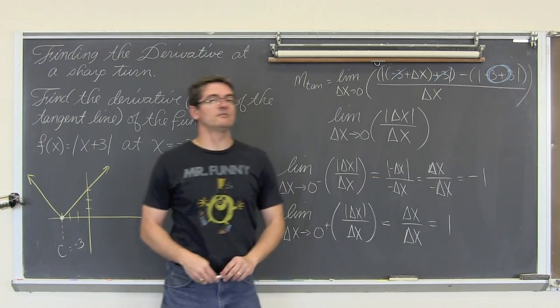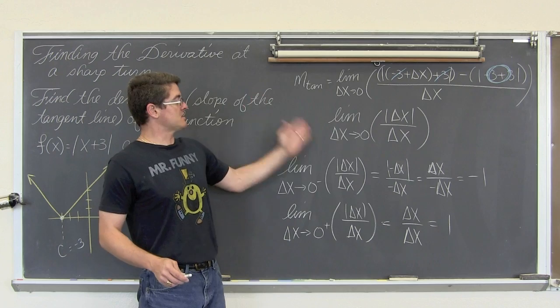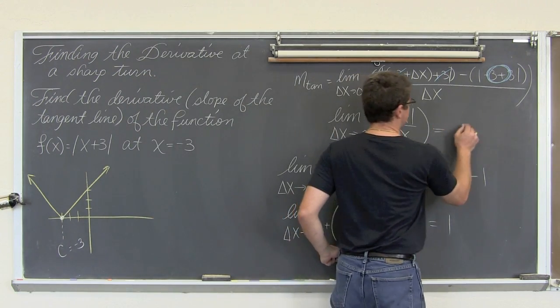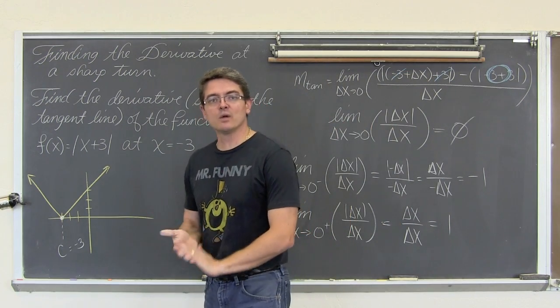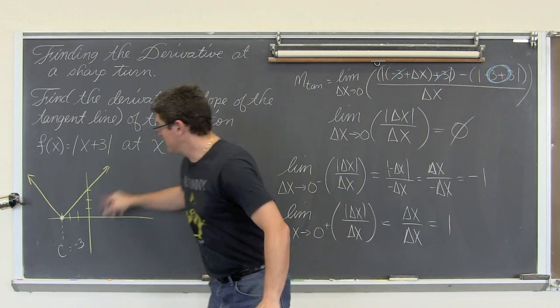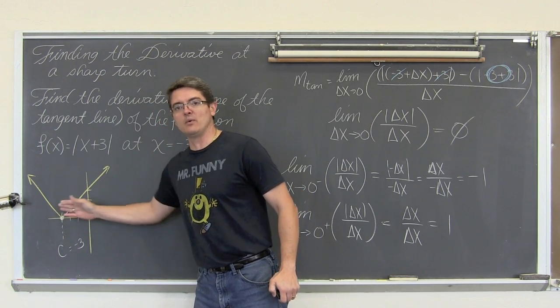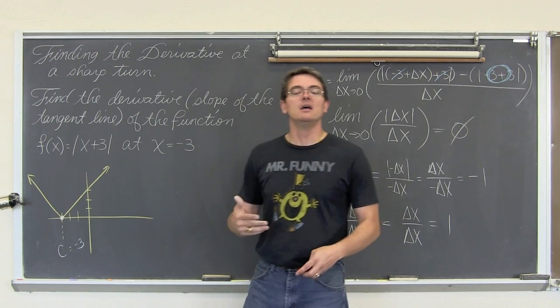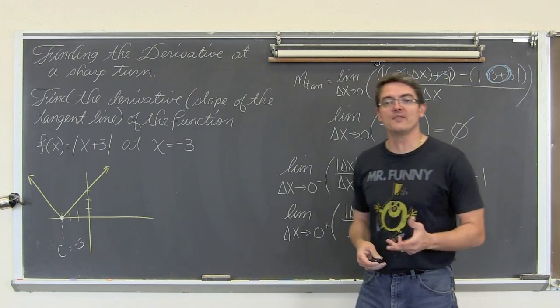My left hand limit is negative one. My right hand limit is positive one. Thus, the limit as Δx approaches zero of |Δx|/Δx does not exist. There is no solution. You cannot find the derivative at a sharp point. There is no slope that we can calculate for this, well this is basically two straight lines at a bend, but we cannot find a slope.